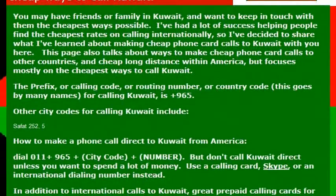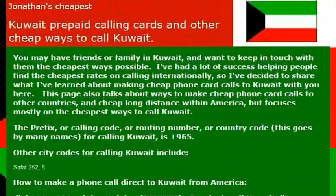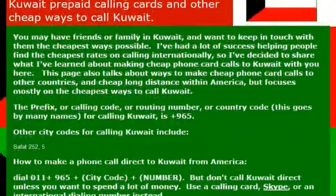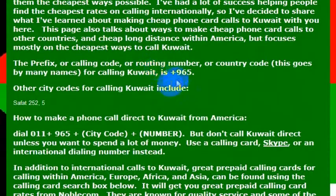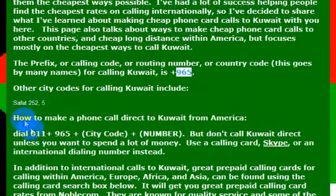In Kuwait, if you want to make a phone call to a friend who is in Kuwait and you're calling from the United States, you'll need to know the country code, which is 965. You will dial the international outbound call,